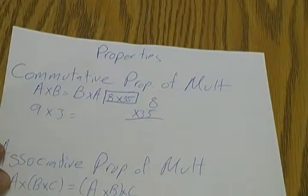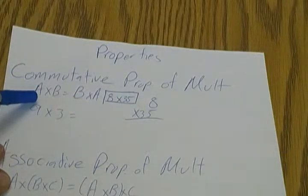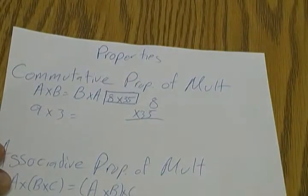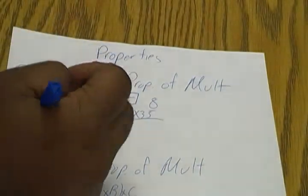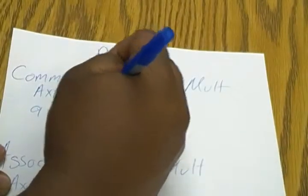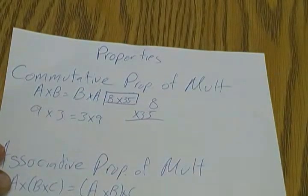So the first one is commutative property of multiplication, which says A times B is the same thing as B times A. What we see here, we have 9 times 3, which is the same thing as saying 3 times 9. Let's put this into practical use.